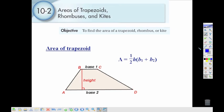In section two, we're looking at areas of trapezoids, rhombuses, and kites. If you want to find the area of a trapezoid, we will use this formula. Area is equal to one half of the height, and in parentheses, we're going to add our bases.